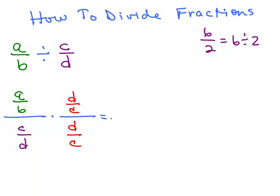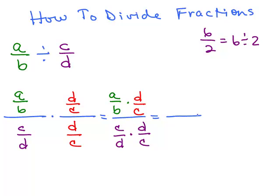Now we're going to use the rule for multiplying fractions, which means you multiply the numerators together. So that's A over B times D over C in the numerator. And in the denominator, I multiply as well: C over D times D over C. Look at the denominator — the C's cancel and the D's cancel, so I'm going to end up with a 1 in the denominator. And in the numerator I've got A over B times D over C. But what's anything over 1? It's itself — like if I had 5 over 1, we could just write 5.